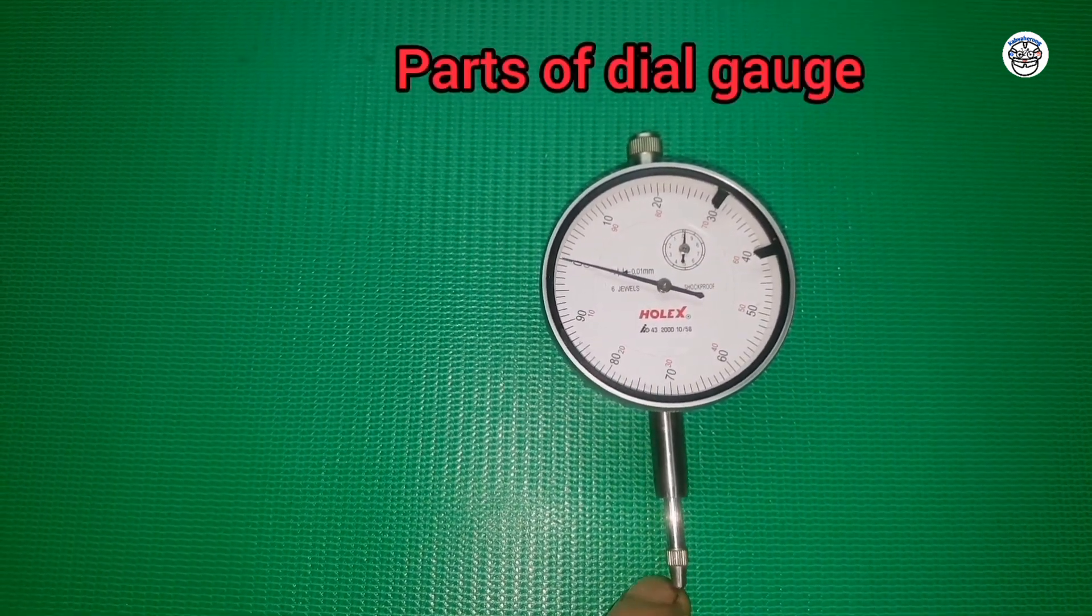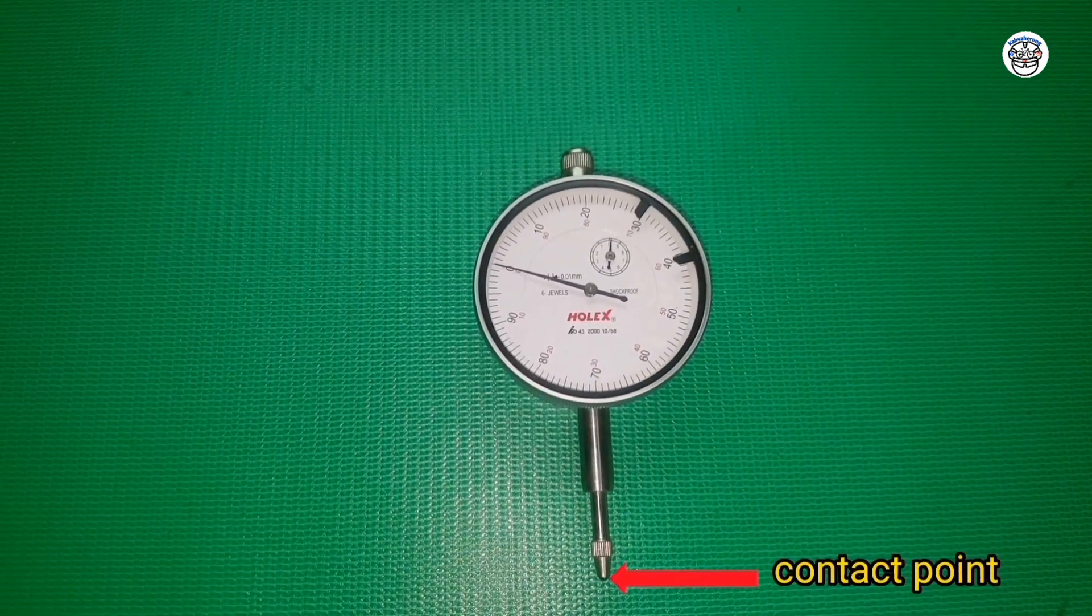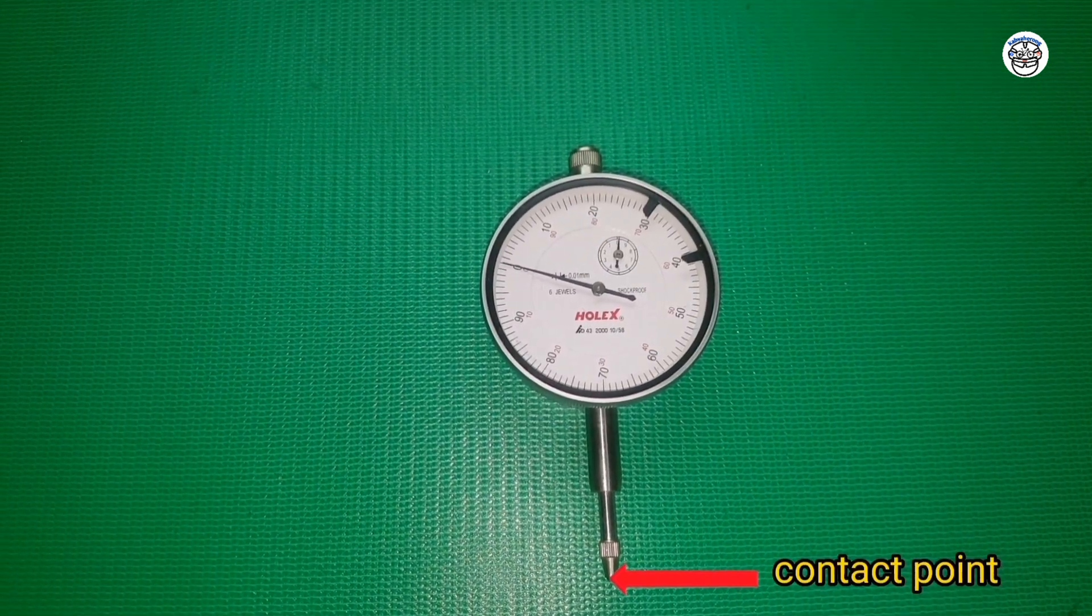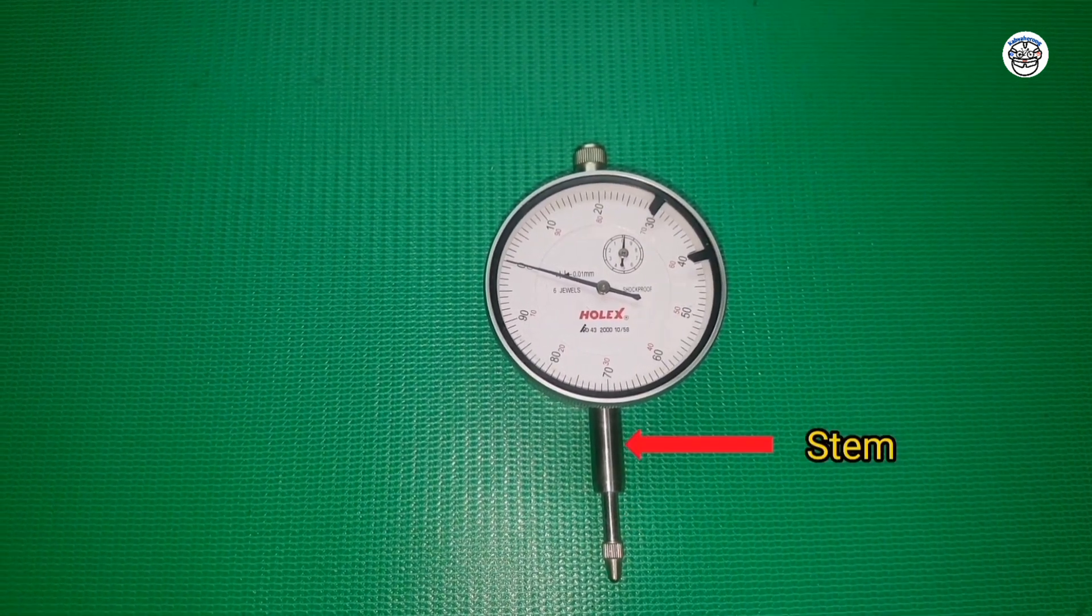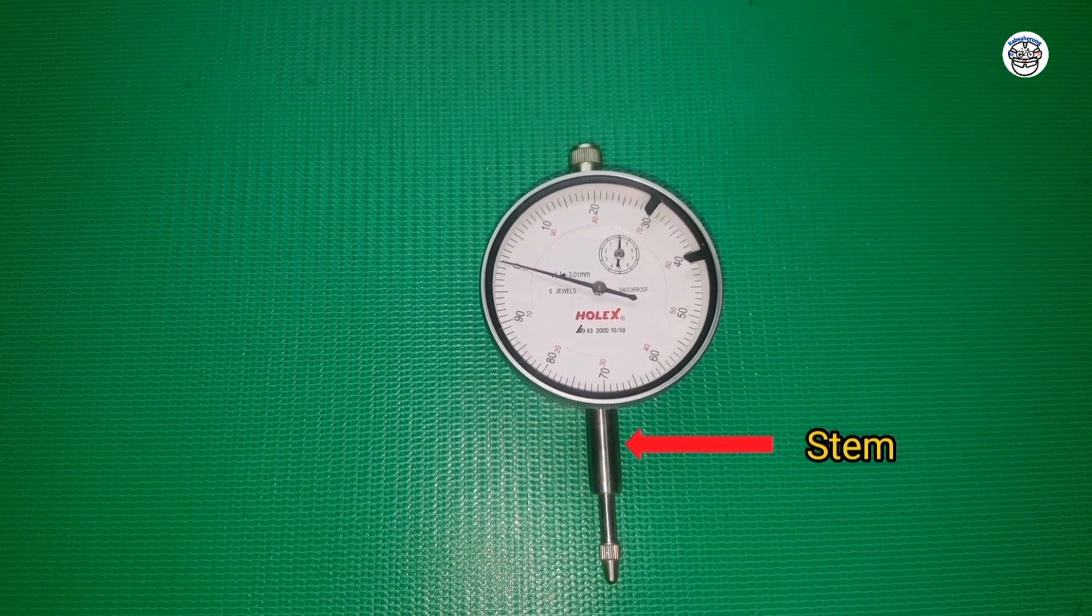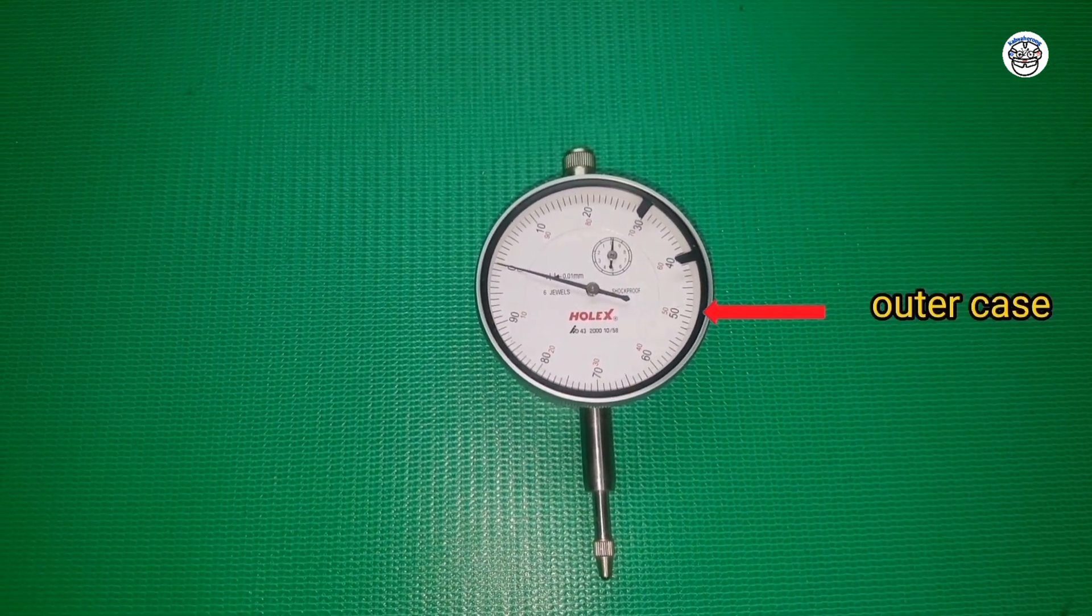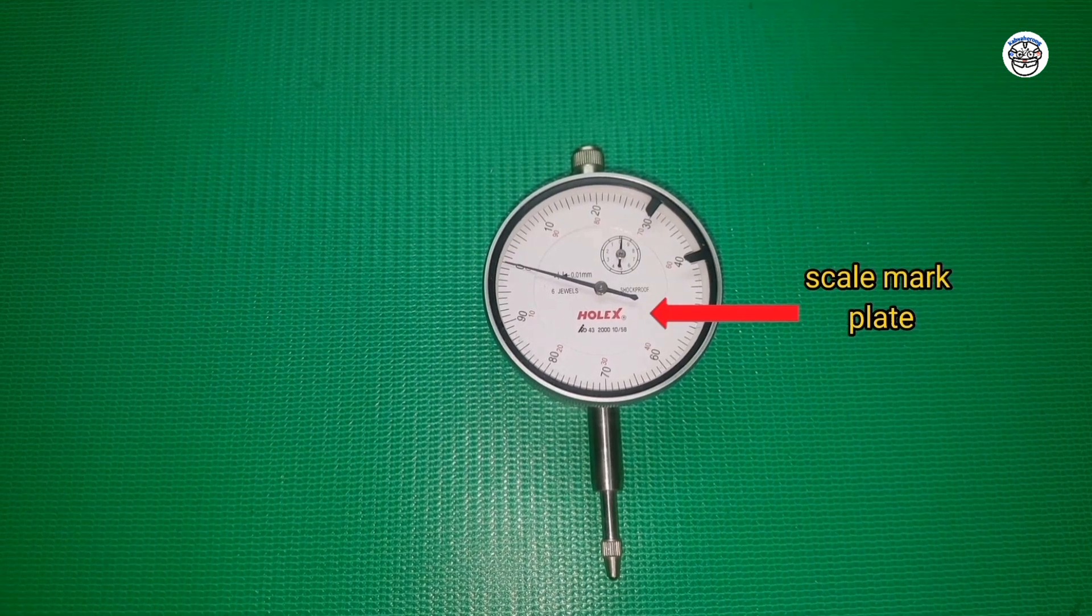Parts of dial gauge: contact point, spindle, stem, outer case, scale mark plate.